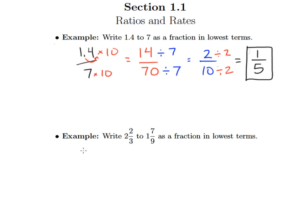Now, this next example has two mixed numbers. So we have 2 and 2/3 to 1 and 7/9, and we want to write that as a fraction in lowest terms. So again, we know that the first mixed number will go on top, and the second one goes on bottom.